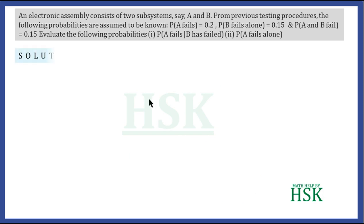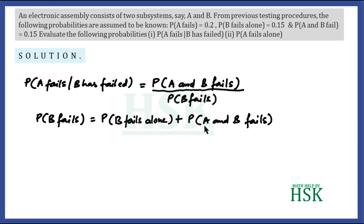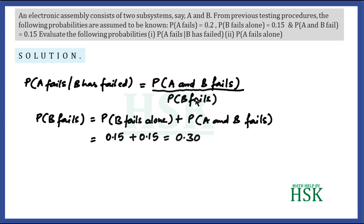For part one, the probability that A fails given that B has failed is calculated as P(A and B both fail) divided by P(B fails). P(A∩B) is given as 0.15. P(B fails) equals P(B fails alone) plus P(A∩B), which is 0.15 plus 0.15 equals 0.30. So the required probability is 0.15 divided by 0.30, which equals 0.5.